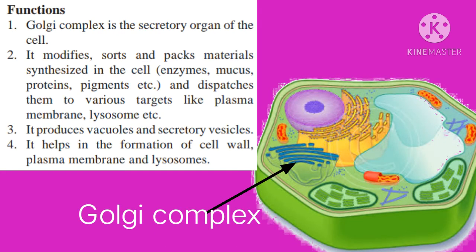The Golgi complex is a packing department. Functions of the Golgi complex: First, it is the secretory organ of the cell. Second, it modifies, sorts, and packs materials synthesized in the cell and dispatches them to various targets like plasma membranes, lysosomes, etc. Third, it produces vacuoles and secretory vesicles. Fourth, it helps in the formation of the cell wall, plasma membranes, and lysosomes.